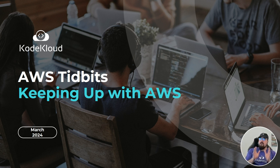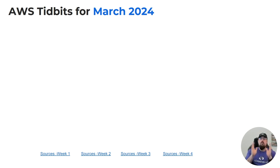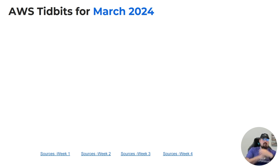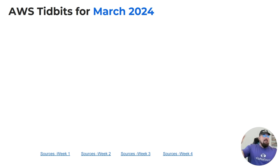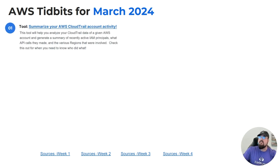First, and arguably the most important: what if you needed to figure out who was doing what in your account? It doesn't matter if it's AWS, Azure, or Google — the idea is the same. You've got to track what's going on and figure out what's happening. This is what this first tool is all about — summarizing your AWS CloudTrail account activity.